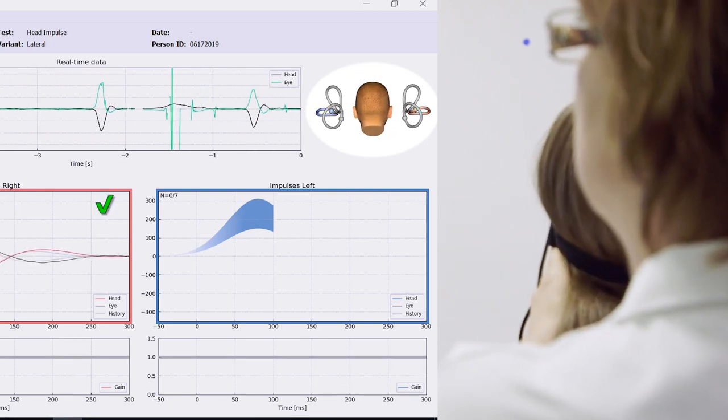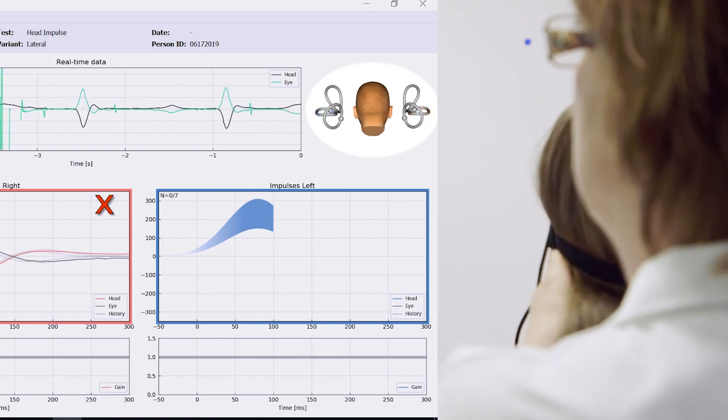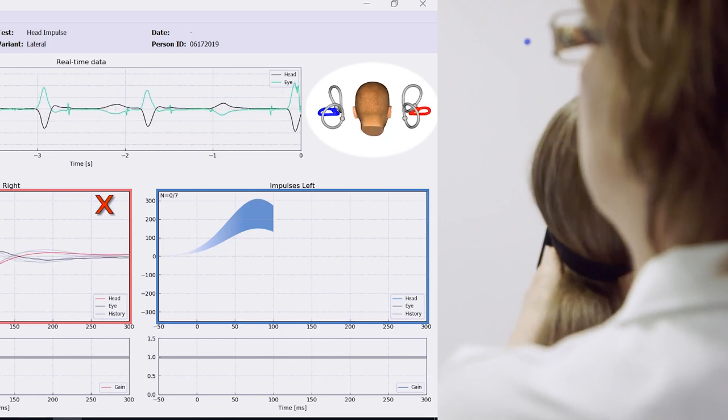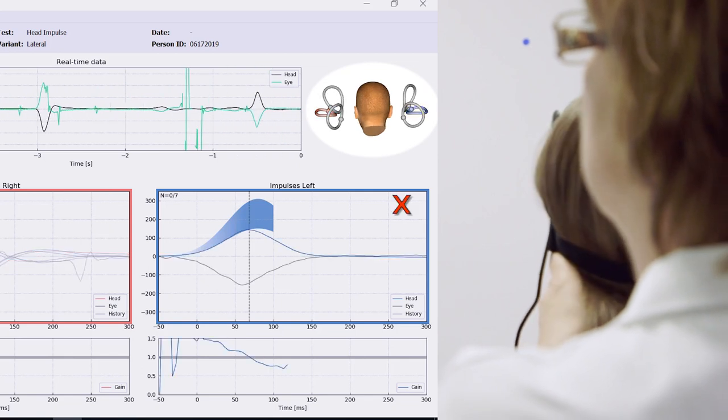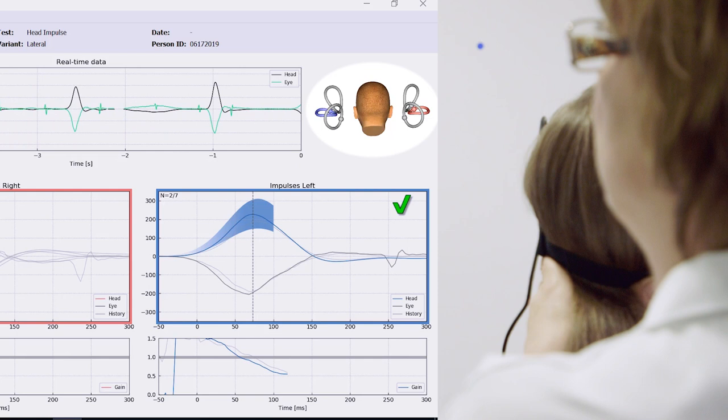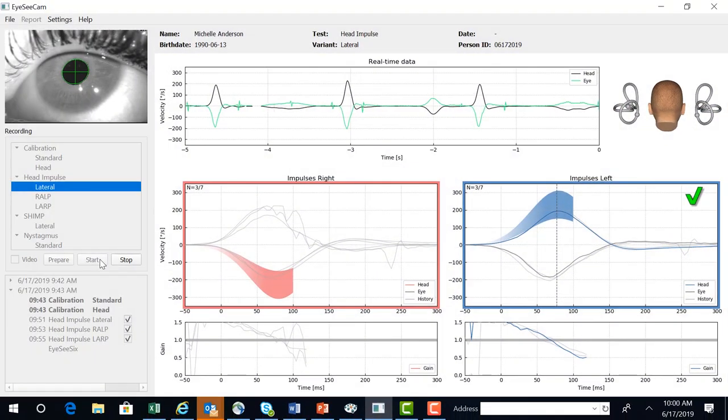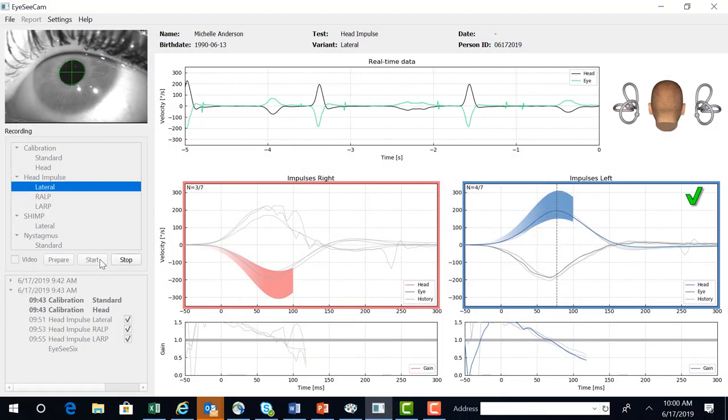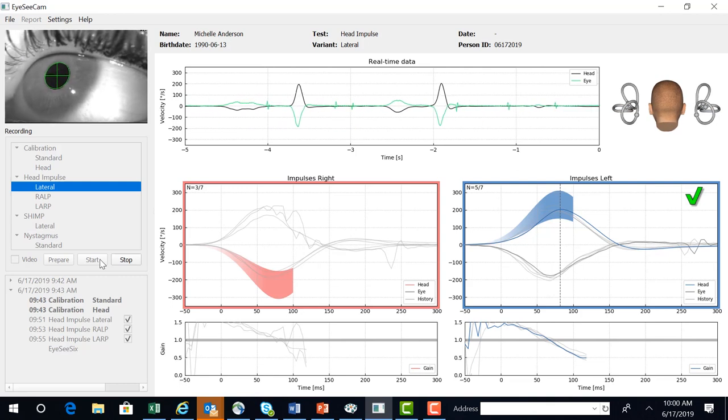And that is because I am exciting, with a right head impulse test, exciting the right canal, inhibiting the left. When I go the opposite way, you see the left canal turn red and the right canal turn blue, because now I'm exciting the left and inhibiting the right.